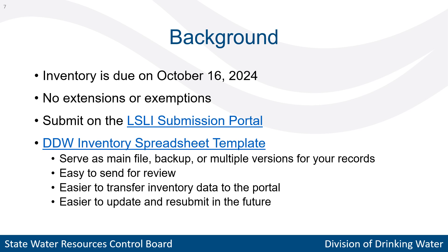The inventory must be submitted online on the LSLI submission portal. We highly recommend using the Division of Drinking Water spreadsheet template to develop your inventory, mainly to serve as the editable inventory file for your system records, but it is not required. You can enter information directly in the portal, but each service line must be entered manually. We also currently don't have a good way to export the entire submission from the portal, which may be another reason to use the template for your records.